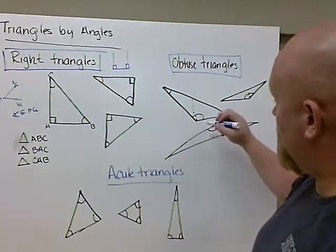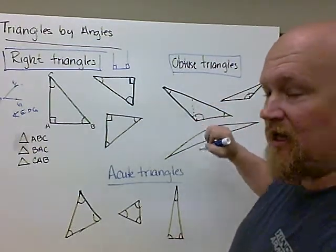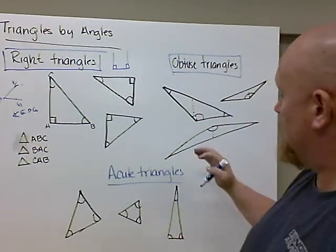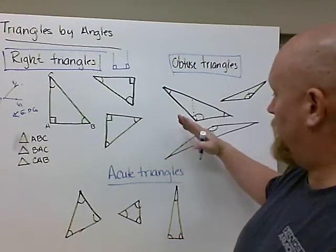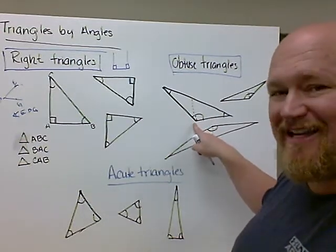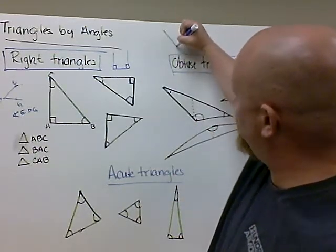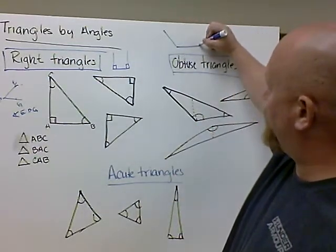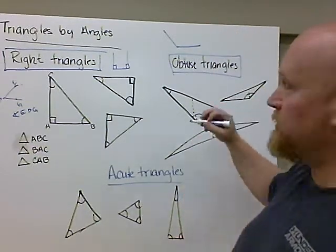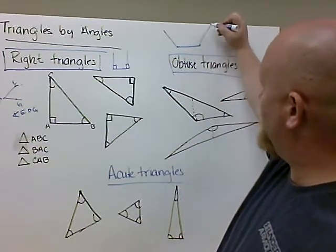So an obtuse angle, and I've put in the dotted line that's supposed to represent 90 degrees, is bigger than a right angle. And just like a right triangle, it can only have one. If I try to draw, here's my obtuse angle. If I use this vertex to draw another obtuse angle, they won't connect.